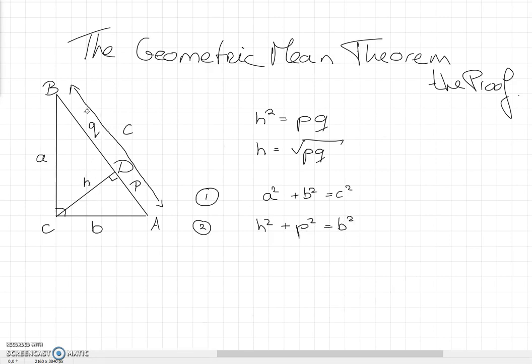And h squared plus q squared is a squared. Then thirdly, we can combine the first two steps. Because a squared plus b squared is c squared, and a squared can be written down as h squared plus q squared, b squared can be written down as h squared plus p squared.